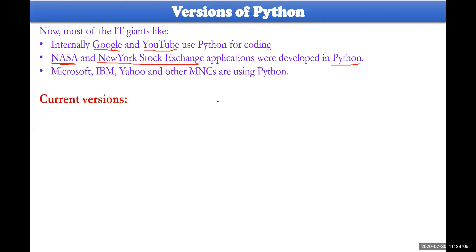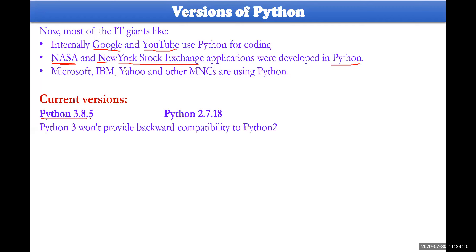The current versions available are Python 3.8.5 and Python 2.7.18. As we know, Python has two versions — Python 3 and Python 2. Python 3.8.5 is the current version right now, and Python 2.7.18 is the current Python 2 version. Python 3 does not provide backward compatibility with Python 2.